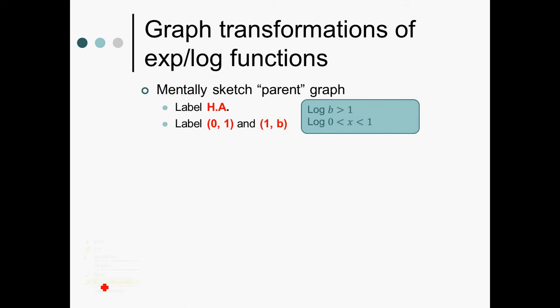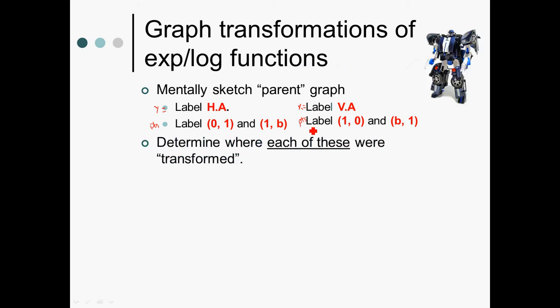Label your horizontal asymptote on the real one. And remember, that's a y issue. Label the points that I always told you to label. That's for exponentials. For logs, label your vertical asymptote. Label the points. And again, this is of your home graph. Then, where were each of these things transformed? Those are the three things along with the shape that I must see in order for you to get full credit on your transformation.